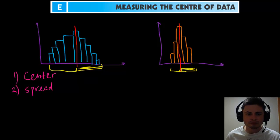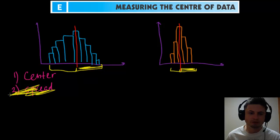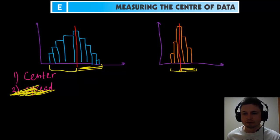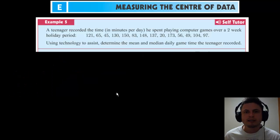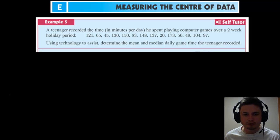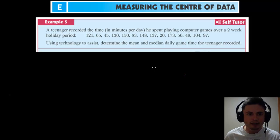We're going to talk about spread in the next video, so I'm going to erase this for now so it doesn't confuse you. Today we're just talking about center, and specifically we're talking about the mean, the mode, the median, and to some extent the range. To investigate these three values, we're going to use the example from page 172, example 5, and this is in chapter 6.